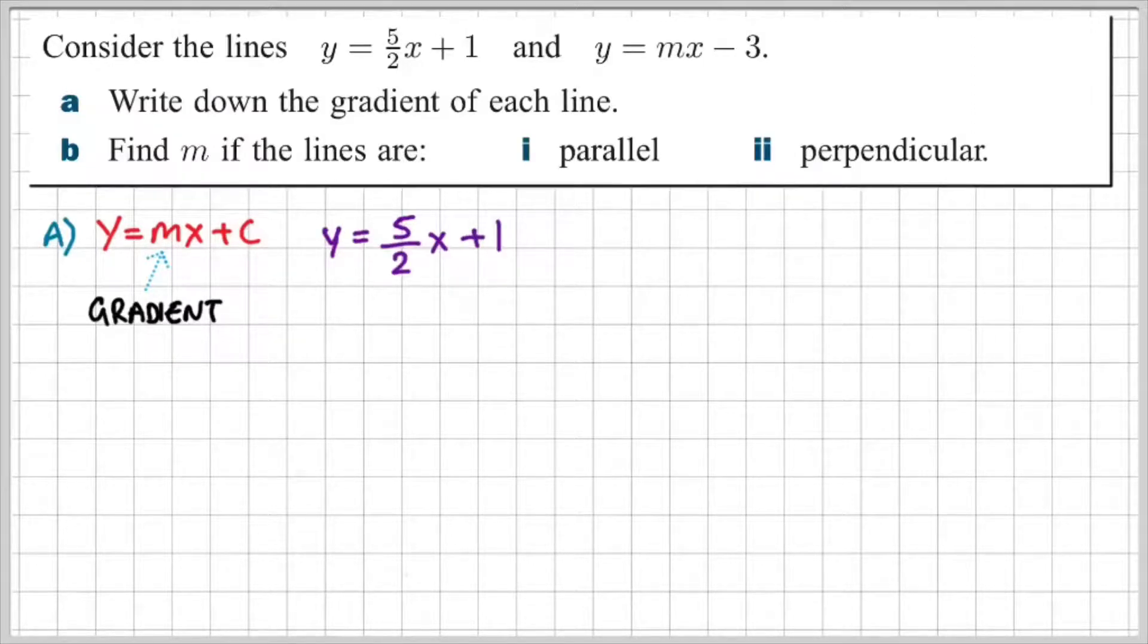Well, five over two x plus one, so the gradient is five over two. Since the equation is written in standard form, we don't need to manipulate anything. Now for y equals mx minus three, the gradient here is just m. We don't have a value for m, we just know that it's the variable m.